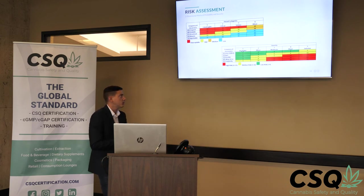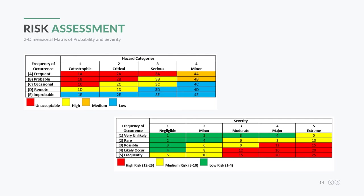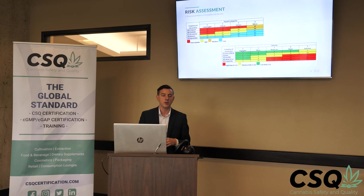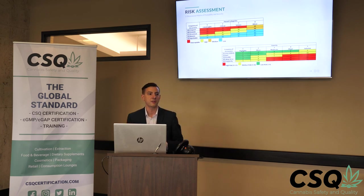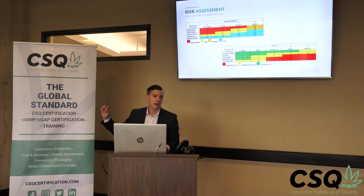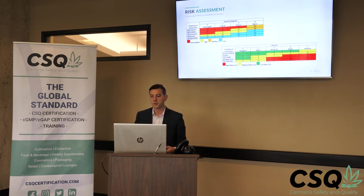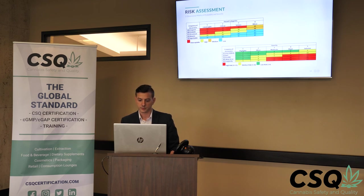The next risk assessment model is the two-dimensional matrix of probability and severity, which is very similar to HACCP. We take the frequency of occurrence and the hazard categories, look at the product, and see where it falls. This is more opinionated, so you should have people who are competent in risk assessments and familiar with the specific product. Someone great at extraction may not be the best person to vet a supplier for edibles, so make sure you have a diverse, competent team.